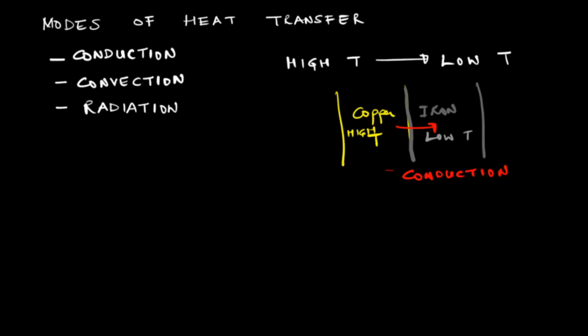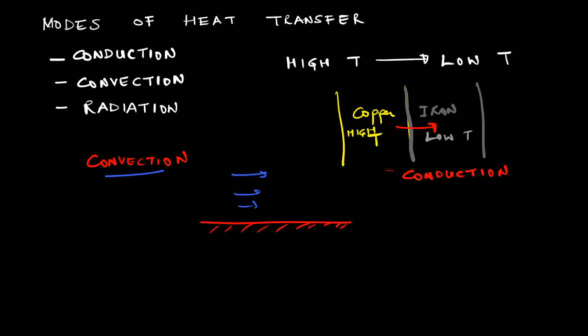If one of the media is a fluid, then besides heat transfer due to collision or exchange of molecules, you can also have transfer of heat due to the movement of the fluid, and this mode is called convection. For example, you may have a hot slab of material over which there is fluid flow; the way heat is transferred from the wall to the fluid is called convection. Air flowing over a car radiator and removing heat is an example of convective heat transfer.